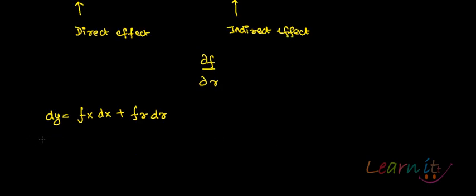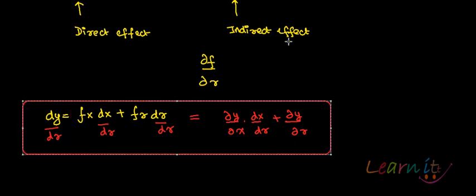Now you need to find out the changes in y due to changes in r. So how do you do that? dy by dr, dx by dr, dr by dr. So it means that what you need to find out is del y by del x into dx by dr plus del y by del r. So this will give you the change in y with respect to r.